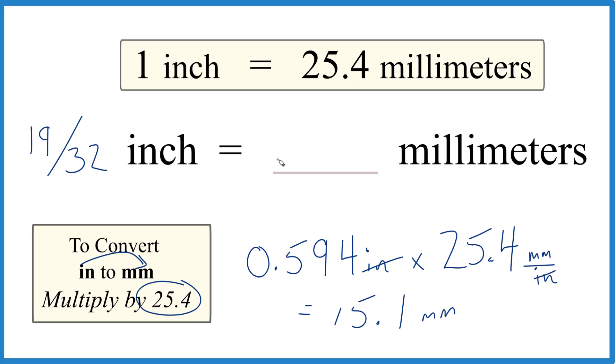So 19/32 of an inch, that's 15.1 millimeters. This is rounded a little bit here.